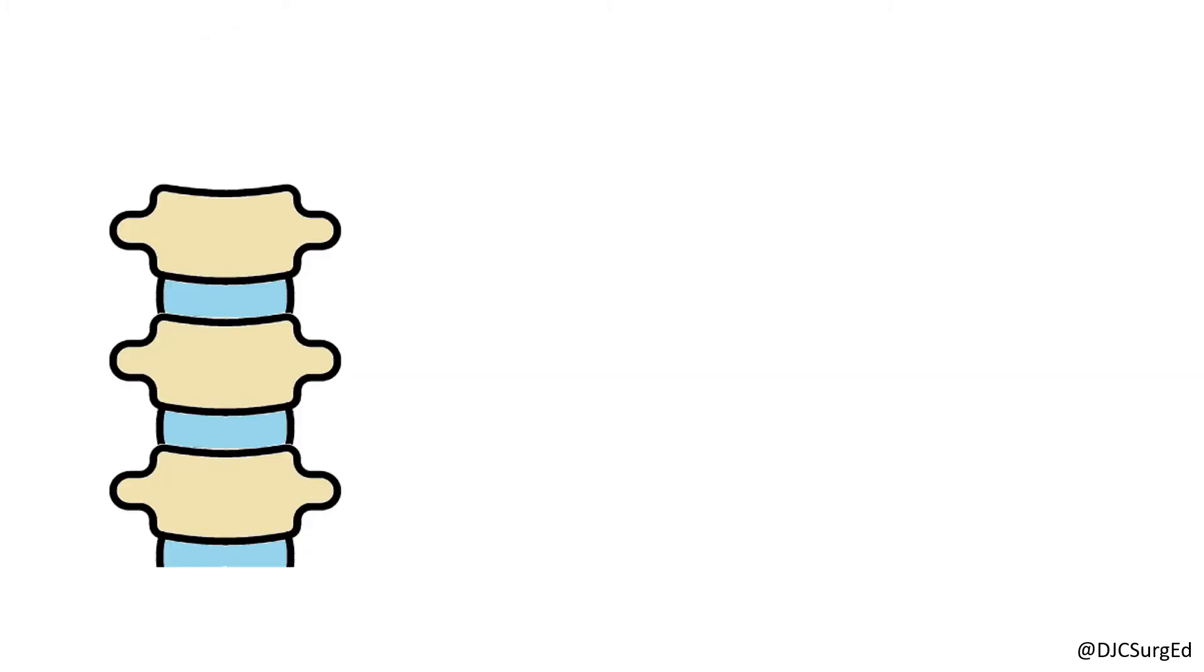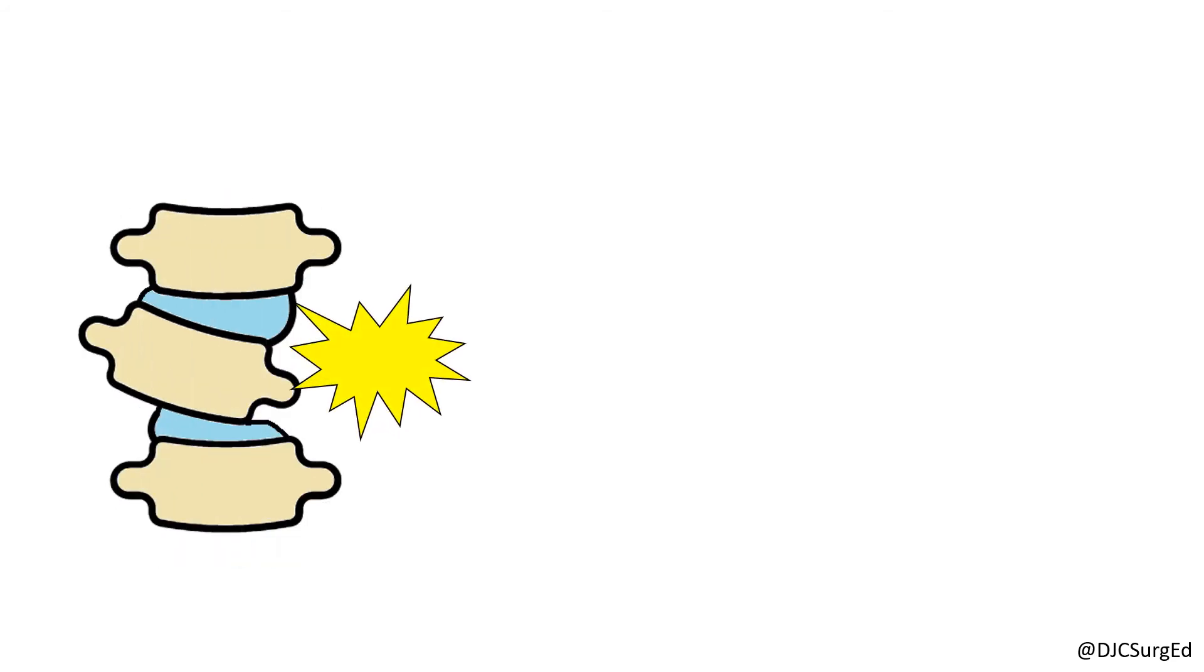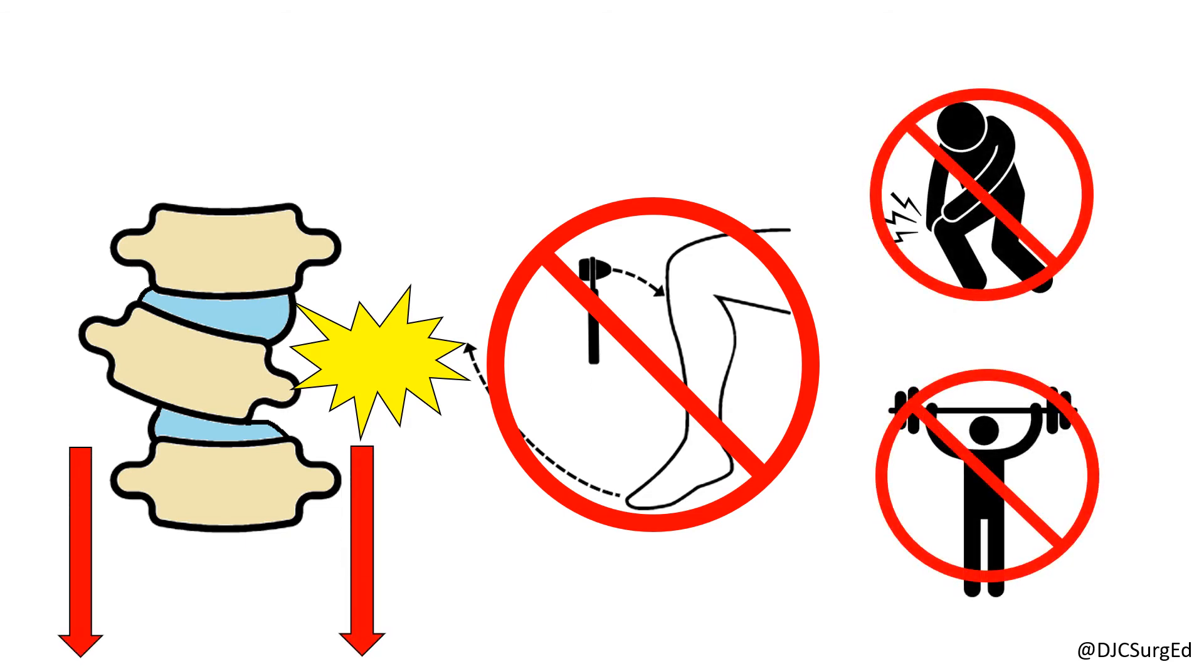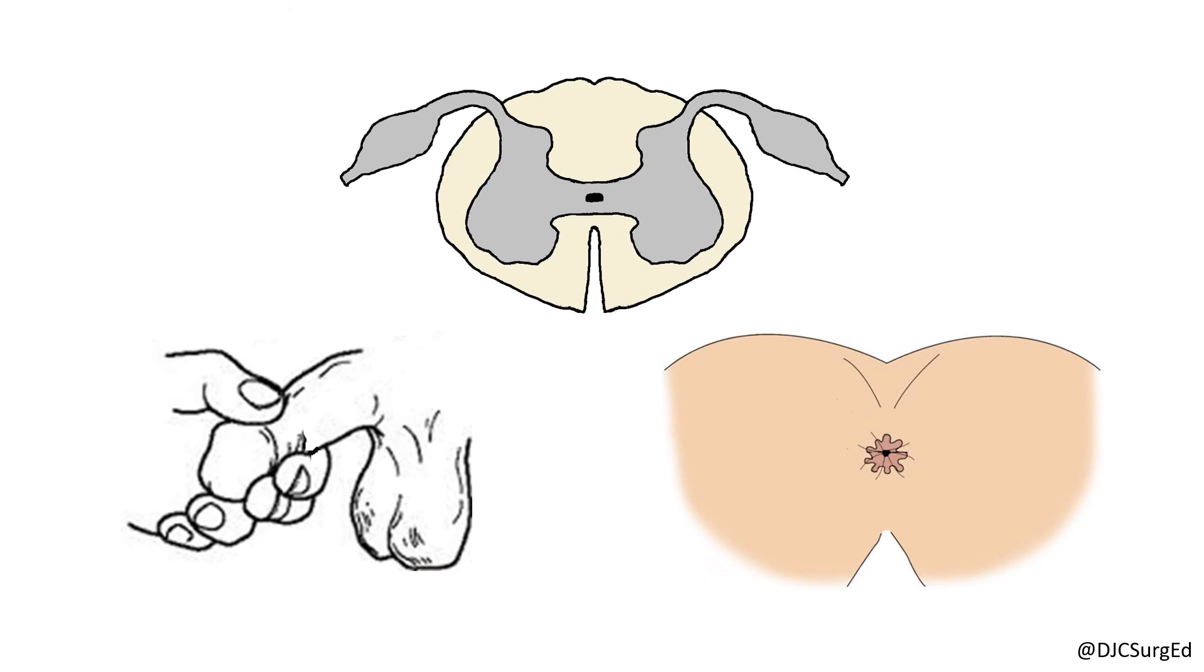Neurogenic shock differs from spinal shock, which occurs with spinal cord injury and is a state of transient physiologic reflex depression of cord function below the level of injury with associated loss of sensory and motor function. It is characterized by flaccid paralysis and areflexia. Recovery of reflexes, such as the bulbocavernosus reflex arc, indicates resolution of spinal shock and no further recovery of lost distal motor function or sensation.